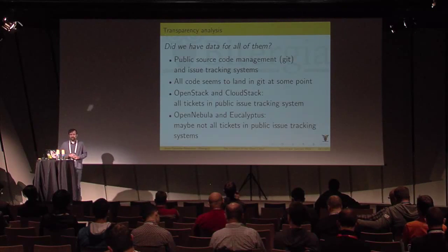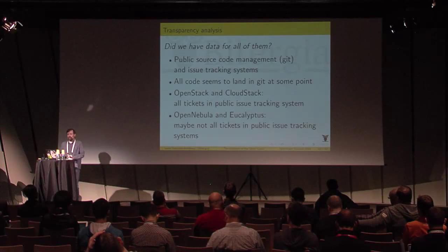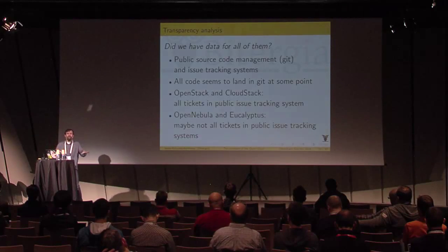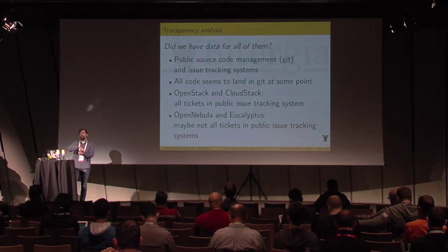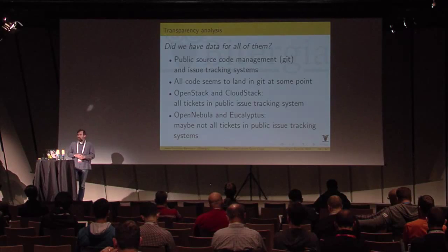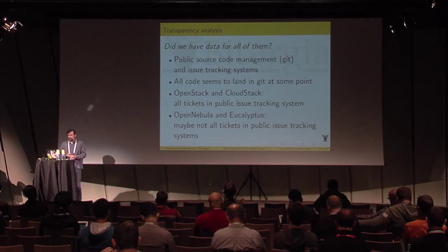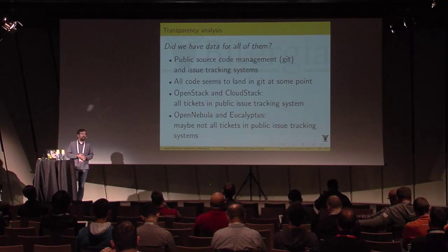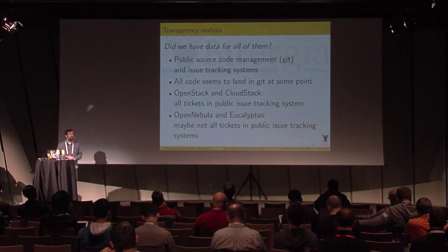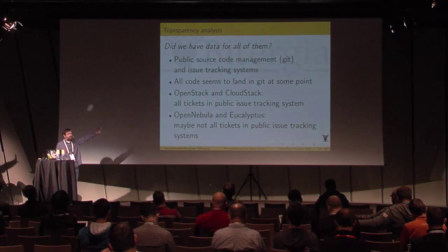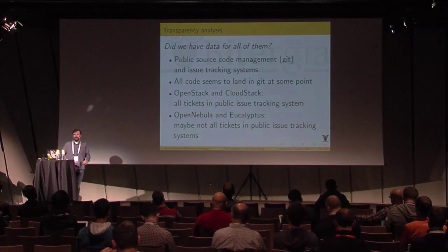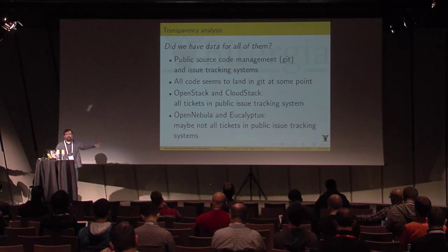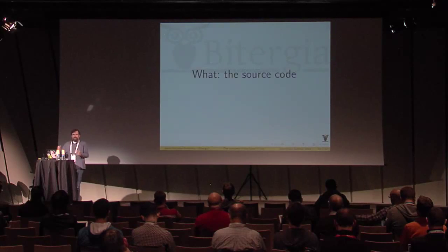In the case of OpenStack and CloudStack, all tickets are in public issue tracking systems. Both projects have a policy that if a ticket belongs to the community, it must be in the community ticketing system. Of course companies have internal ticketing systems, but the moment it becomes a community issue, it has to come to the official ticket repository. In the case of OpenNebula and Eucalyptus, that's not as clear — contacting both, they said there may be tickets in other systems. Both are led by companies, so some tickets likely exist in internal systems for clients. This means that for OpenNebula and Eucalyptus, activity with respect to tickets could be underestimated.